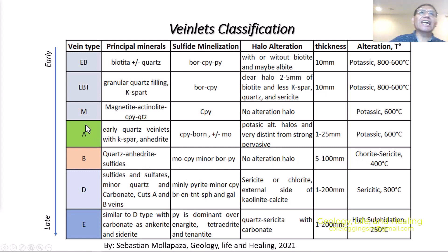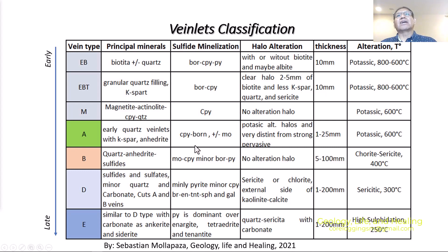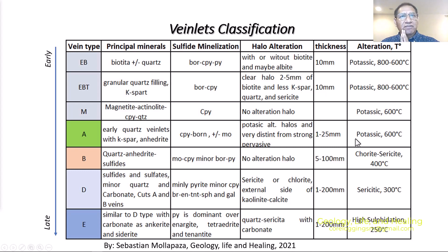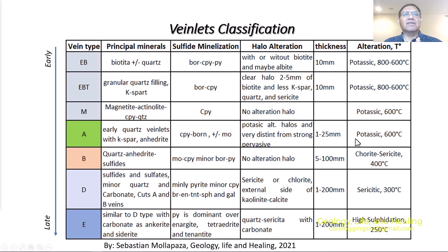For the type A veinlet, it's supposed to be the early quartz veinlets with K-feldspar. It might have anhydrite and sulfide mineralization, may have bornite and chalcopyrite, and it might not have molybdenite. A very distinct classification feature is potassic alteration halos, which are very distinct from strong to pervasive. The thickness of the veinlets belongs to potassic alteration. Another variant or sequence for type A is a secondary biotite halo alteration.